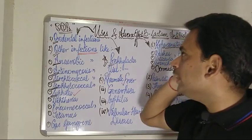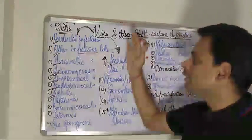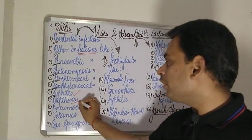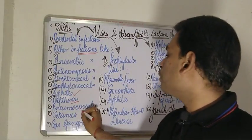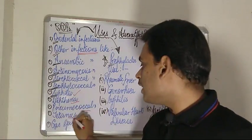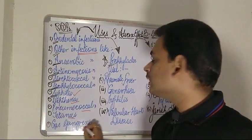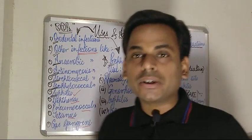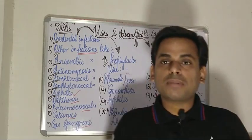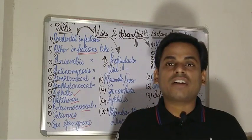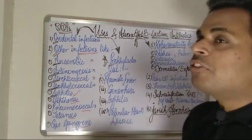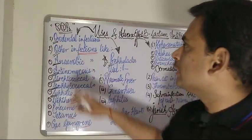Moving on to the next uses: in the treatment of diphtheria, pneumococcal infections, tetanus, and cases of gas gangrene, the beta-lactam antibiotics find their wide usage. Moving on to the prophylactic uses.